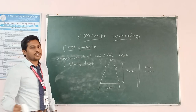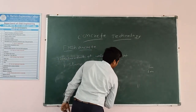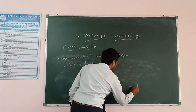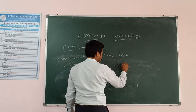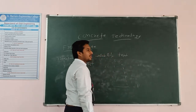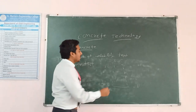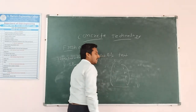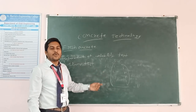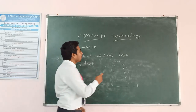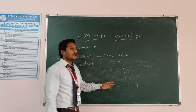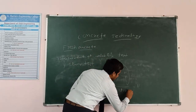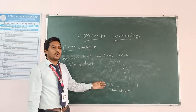There are different types of slump. The first is true slump. We place concrete in the cone structure and after removing the cone, if the concrete remains stable without collapsing, it is called true slump.